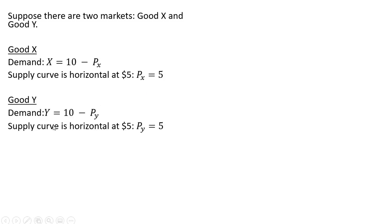We have two markets, good X and good Y. The demand for good X is X = 10 - P_x. The supply curve in this market is perfectly elastic at a price of $5, so the equilibrium price right now is $5. Good Y is identical, same type of demand, same idea with a perfectly elastic supply that is horizontal at $5.